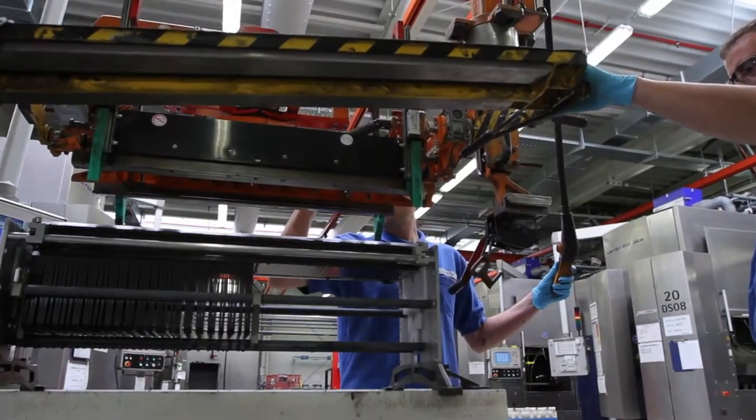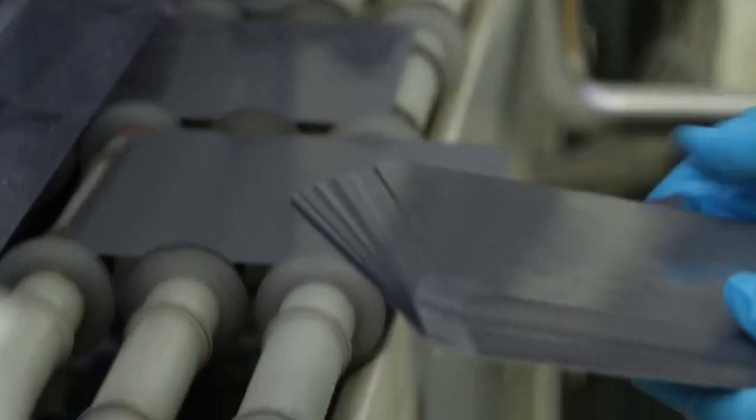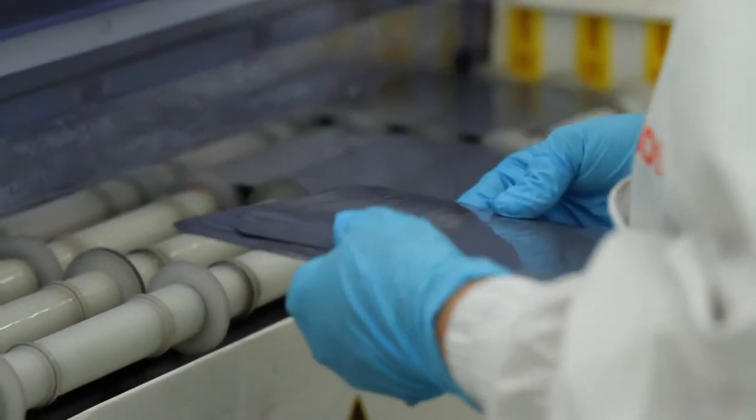Once the wafers have been cut, they are sent through a wash tunnel. This is because even the smallest piece of dust or dirt can compromise solar cell production.